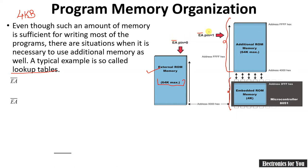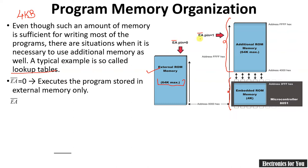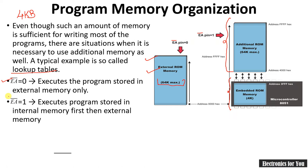To distinguish between internal and external memory, the EA-bar signal — external access signal — is used. If we send zero on the EA-bar pin, only external program memory is accessed, and all 64 KB of external memory will be used. If we apply EA-bar equal to one — that is, send a 5-volt signal — then both internal and external memory can be used: first the 4 KB internal memory, and later the remaining 60 KB external memory.